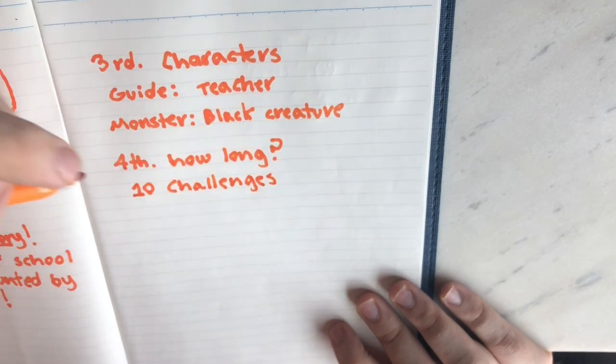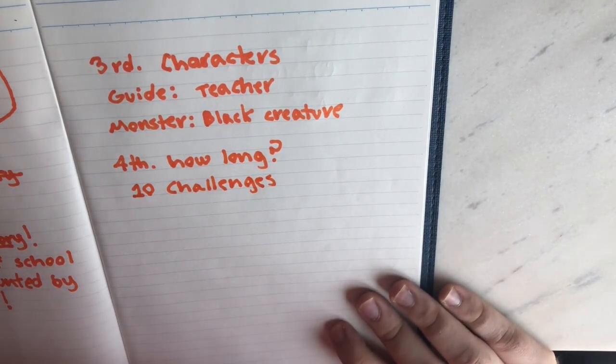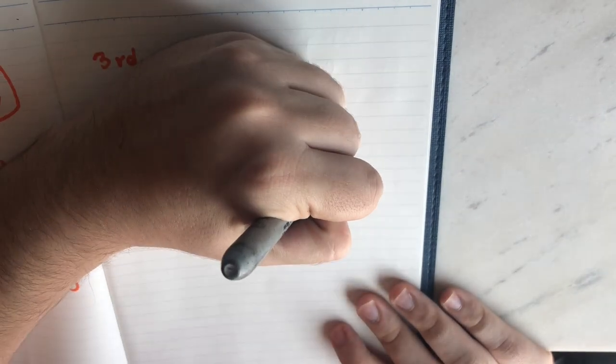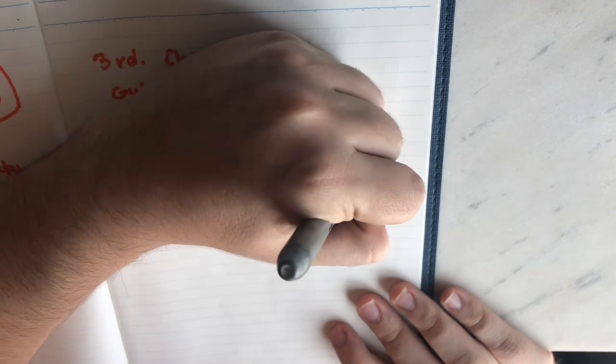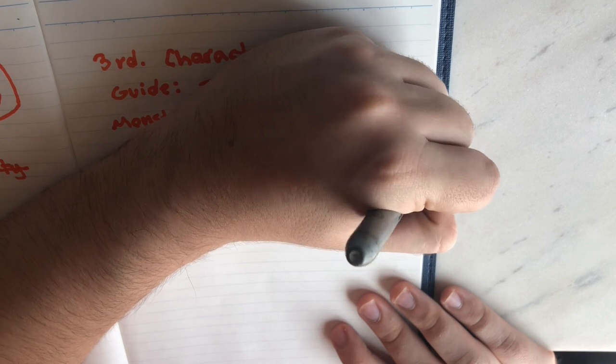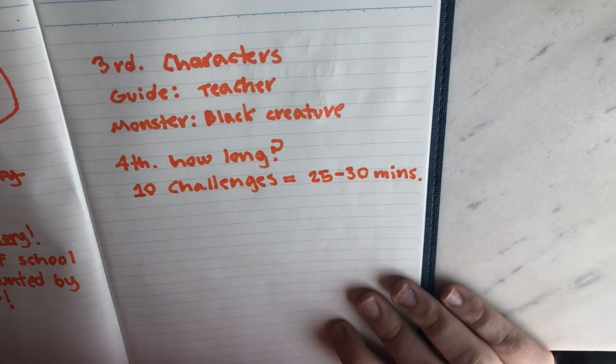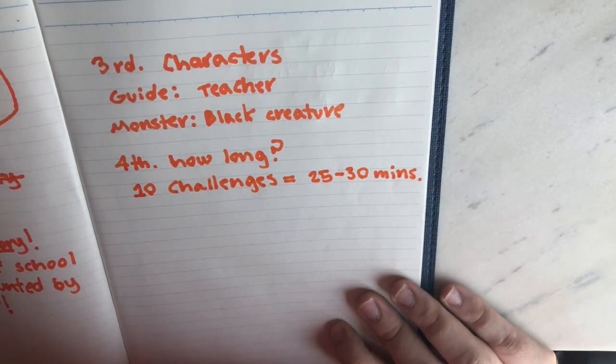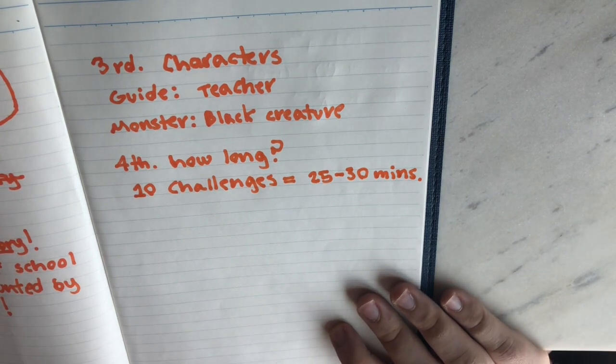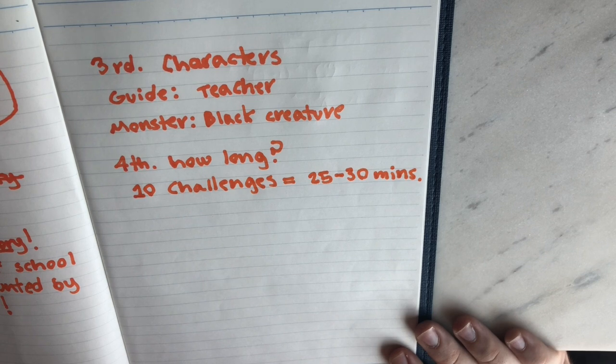One way I like to do this is by deciding how many challenges my game will include. What are challenges? Challenges are when something happens. Like for example in my game airplane where when you have to find your seat, or when you have to find a luggage to save someone. When you have to do something to survive.